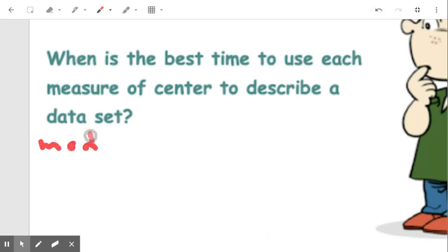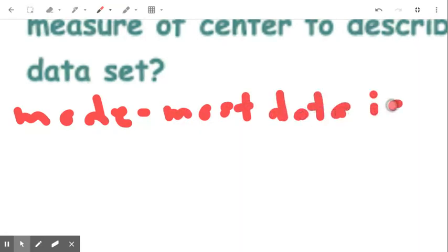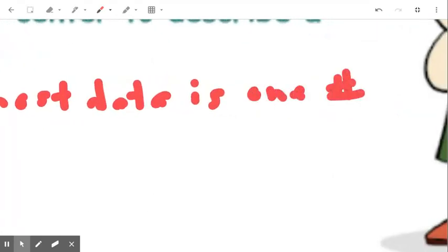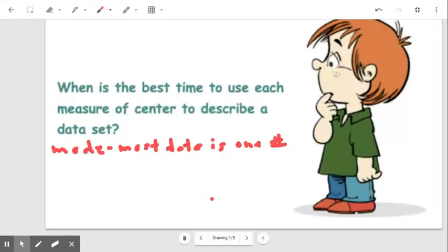The mode is used when most data is one number. So if I have almost all the same number and very little else, I'm going to use the mode.